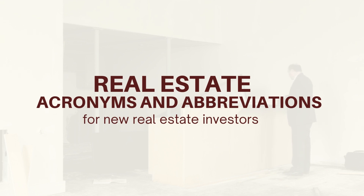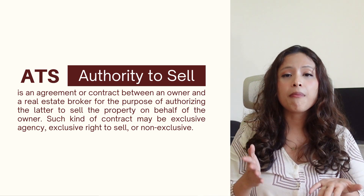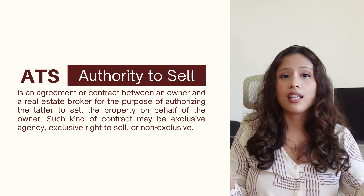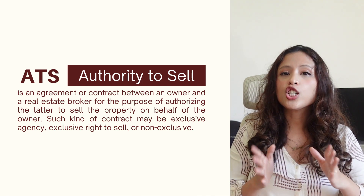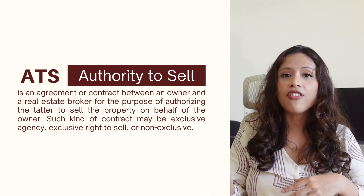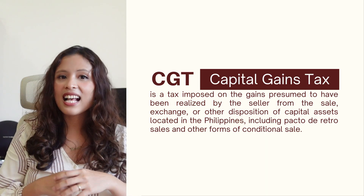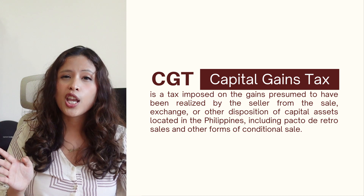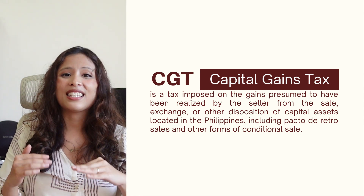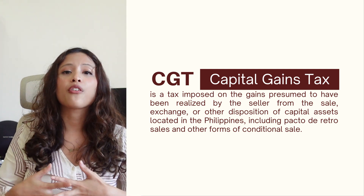Meanwhile, the following are the real estate acronyms and abbreviations a real estate investor may want to know. ATS, for Authority to Sell, is an agreement or contract between an owner and a real estate broker for the purpose of authorizing the latter to sell the property on behalf of the owner. Such kind of contract may be exclusive agency, exclusive right to sell, or non-exclusive. CGT, for Capital Gains Tax, is a tax imposed on the gains presumed to have been realized by the seller from the sale, exchange, or other disposition of capital assets located in the Philippines, including Pacto de Retro Sales and other forms of conditional sale.